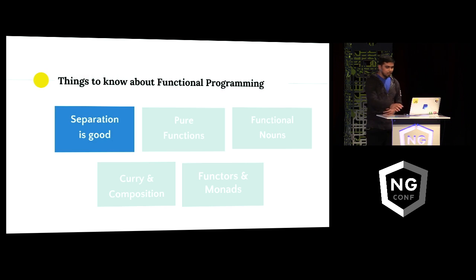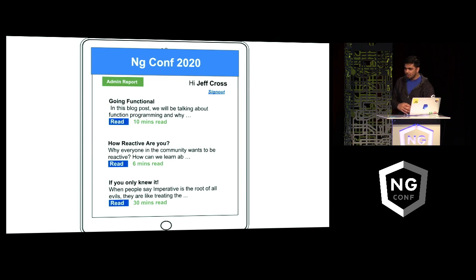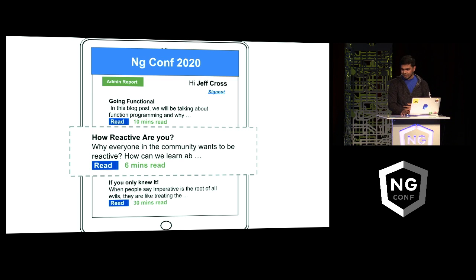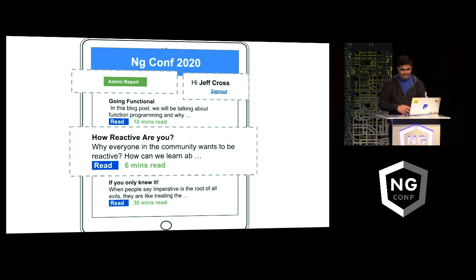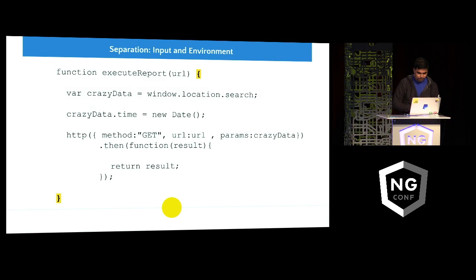But just before that, here's the NG Conf blog we'll be creating today. We have a list of posts, each with a teaser text. We have the name of the user logged in. Any resemblance to our Jeff Cross is accidental. And we have the admin report button, which actually tells how the blog is doing. So when I click on this execute report button, this function gets executed.